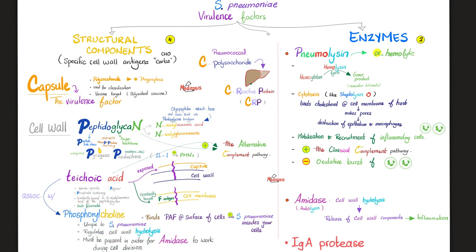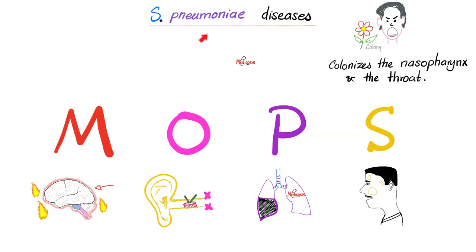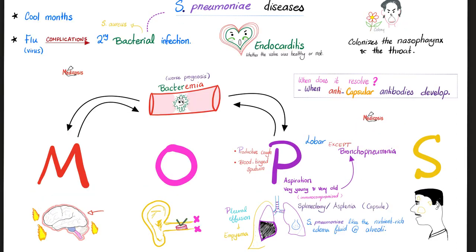All of them are parts of the cell wall. And we have two enzymes: pneumolysin is number one, amidase is number two. What are the diseases caused by Streptococcus pneumoniae? Meningitis, otitis media, pneumonia, and sinusitis.